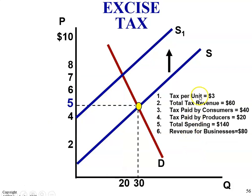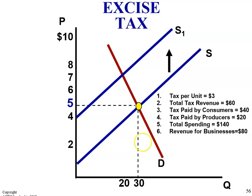To do the calculation: the tax is going to be $3, total revenue is $60, tax paid by consumers would be $40, tax paid by producers would be $20, total spending is going to be $140, and the revenue for businesses is $80.